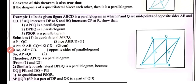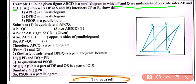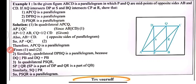Example 1: In the given figure, ABCD is a parallelogram in which P and Q are the midpoints of sides AB and CD. AQ intersects DP at point S, and BQ intersects CP at R. We have to prove that APCQ is a parallelogram, DPBQ is a parallelogram, and PSQR is a parallelogram.